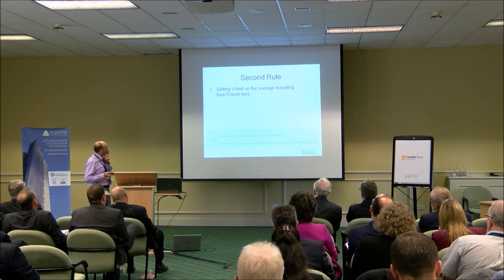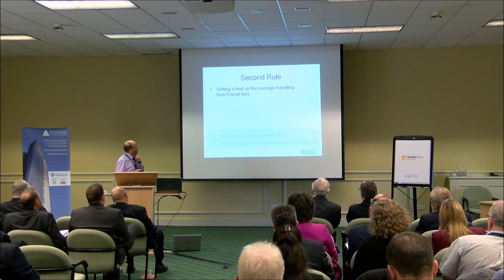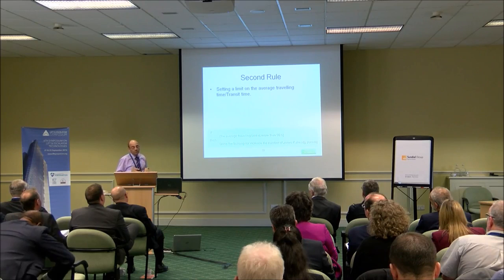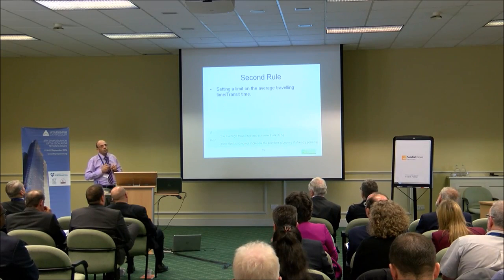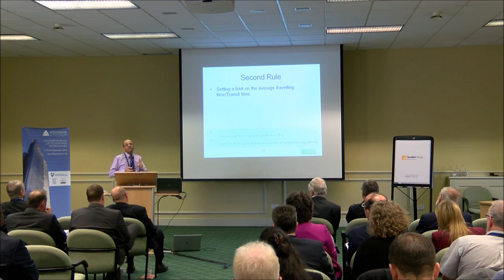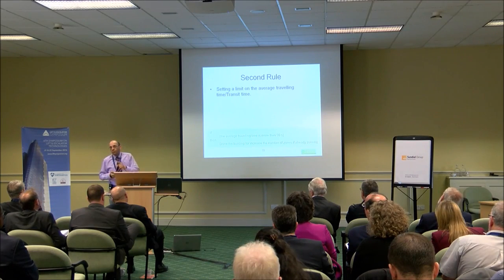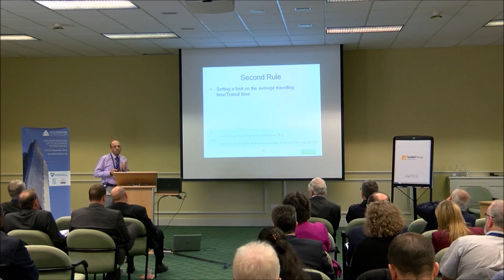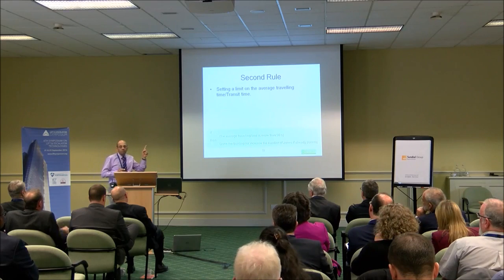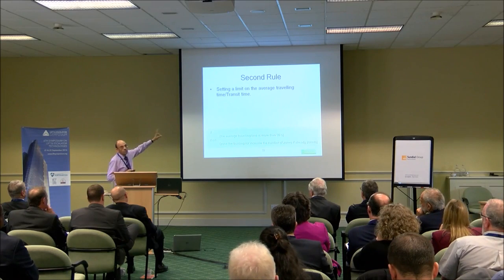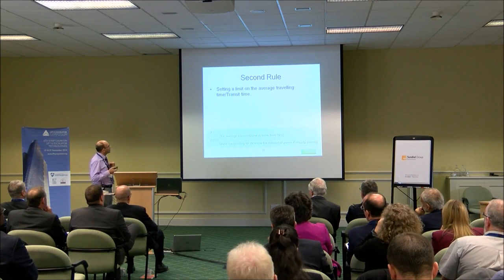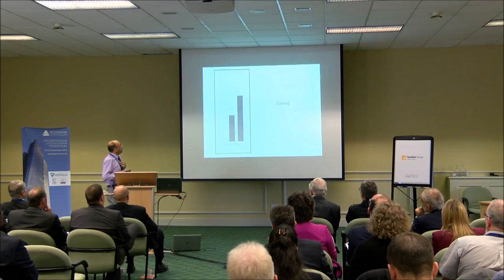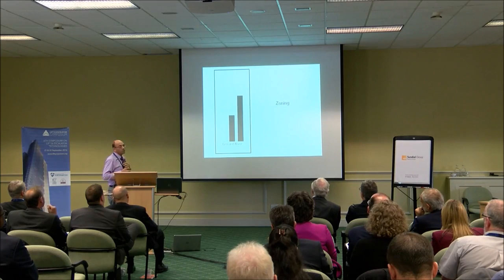The second rule is about zoning. If the traveling or transit time exceeds a certain limit, usually you need to zone — that's the trigger for zoning. Rather than saying 'if you have more than 20 floors, you zone' — that's a rule of thumb — this rational rule states what the reasoning behind it is.